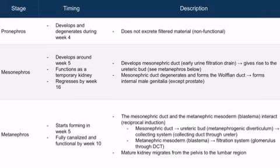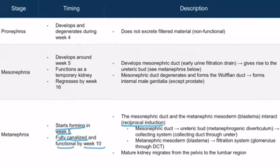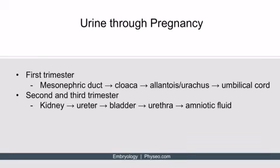Going back to the table, the metanephros starts forming around week 5, so there is overlap between the metanephros and the mesonephros, which makes sense because of that reciprocal induction. The metanephros is fully canalized and functional by week 10. The metanephros, ultimately forming the mature kidney, will then migrate from the pelvis to the lumbar region.